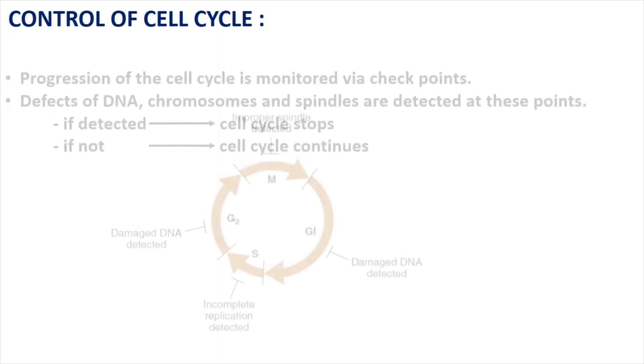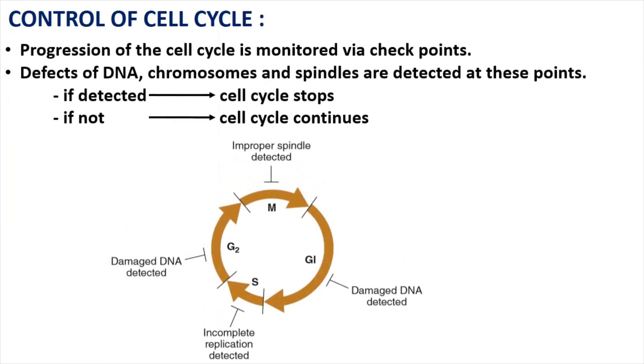Now we have come to the second part of our topic: the control of the cell cycle. Since this cycle is closely related to the DNA content of the cell, it needs to be properly monitored and controlled. If not, it can lead to the production of mutated and cancerous cells. This monitoring is done via checkpoints situated at several points of the cell cycle.